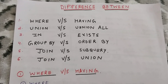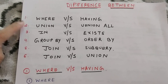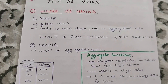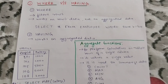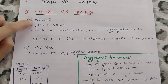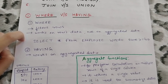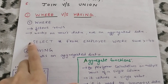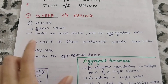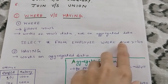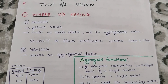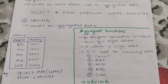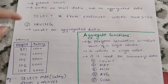This is the first part of the video and here I will cover the first three. Let's start with the first one — the basic difference between WHERE and HAVING. WHERE is used for filtering rows and it works on row data, not on aggregated data. A basic query would be something like: SELECT * FROM employee WHERE score >= 40. This is basically for filtering rows, but HAVING works on aggregated data and not on normal rows.